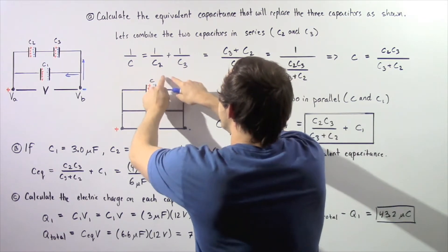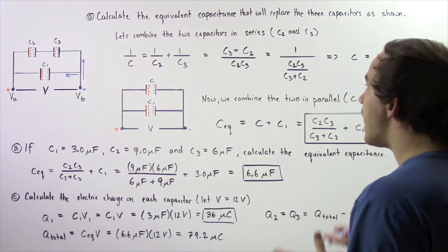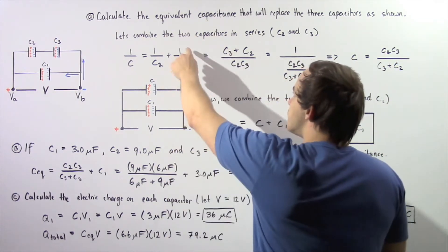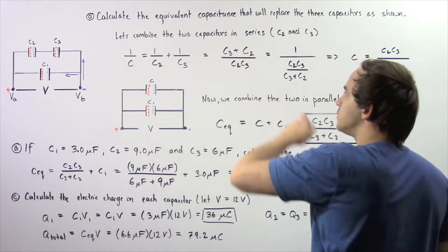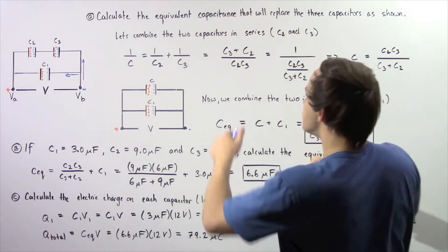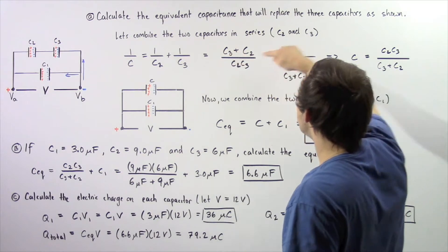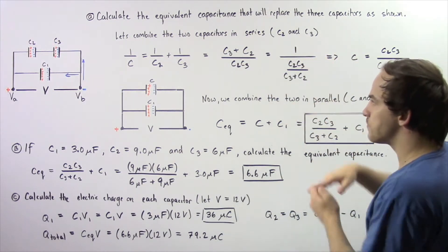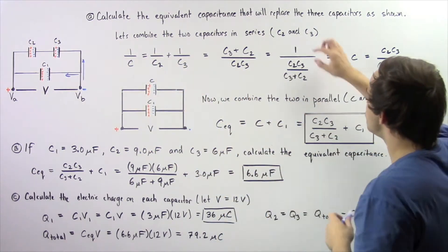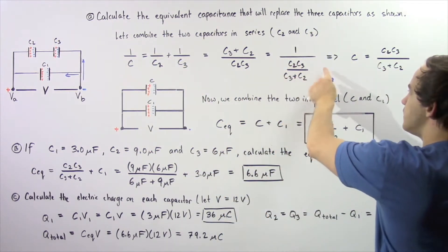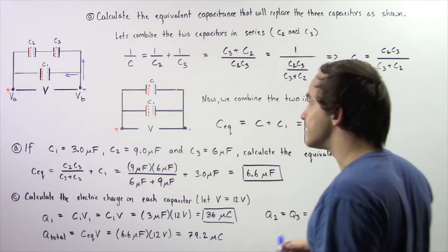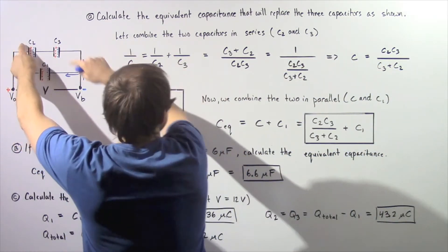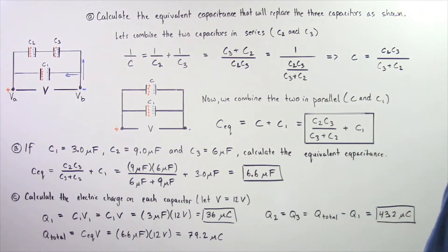We want to combine the following fractions by finding their common denominators. We multiply the first term by C3 and the second by C2, so the numerator becomes C3 plus C2 and the denominator becomes C2 multiplied by C3. Dividing top and bottom by C3 plus C2, we get one divided by C equals one divided by the quantity C2 times C3 divided by C3 plus C2. Therefore, the equivalent capacitance C from combining C2 and C3 in series is equal to C2 multiplied by C3 divided by C3 plus C2.